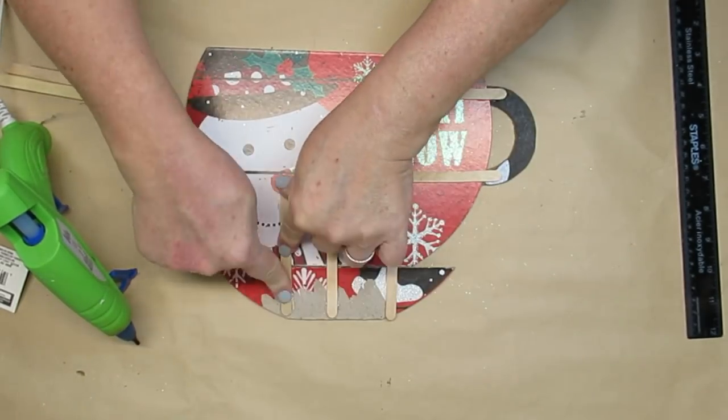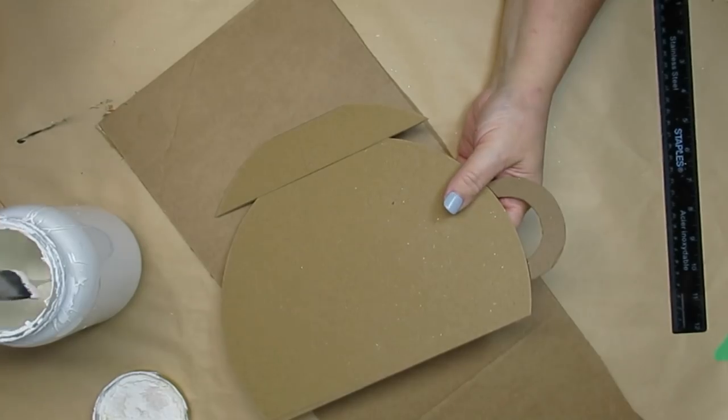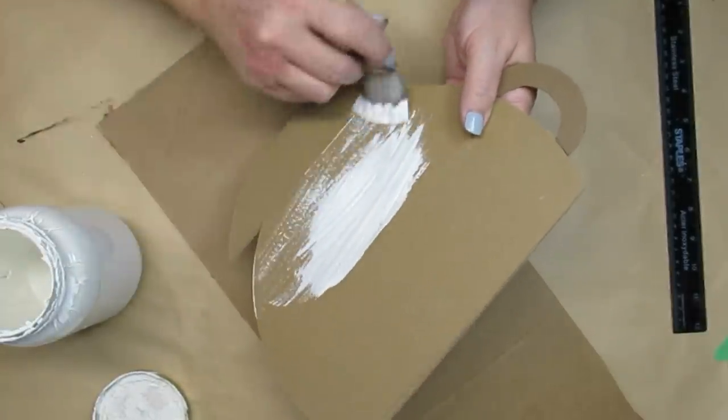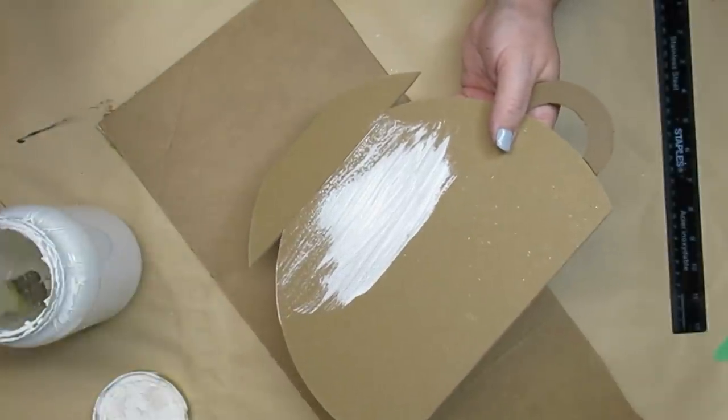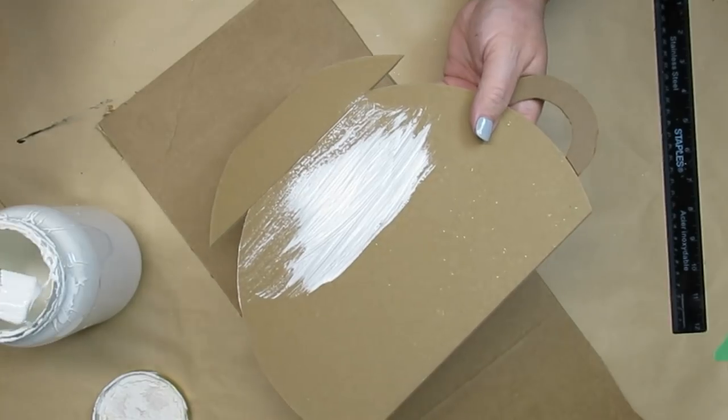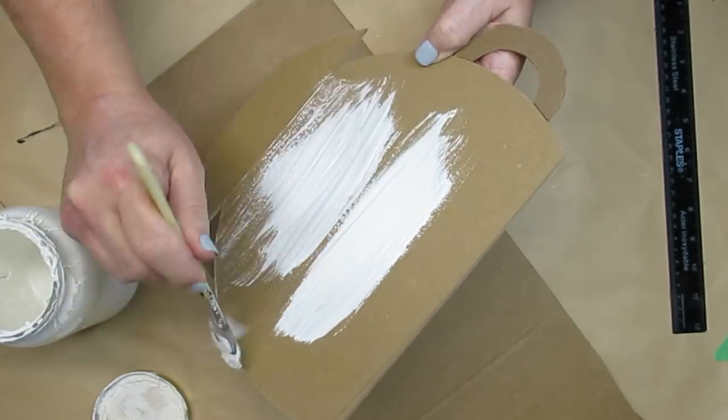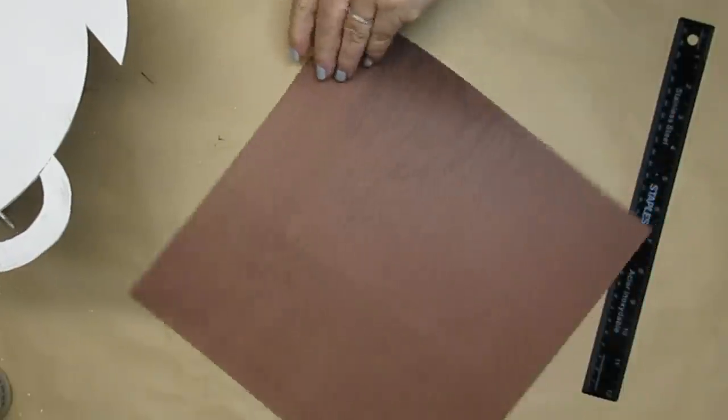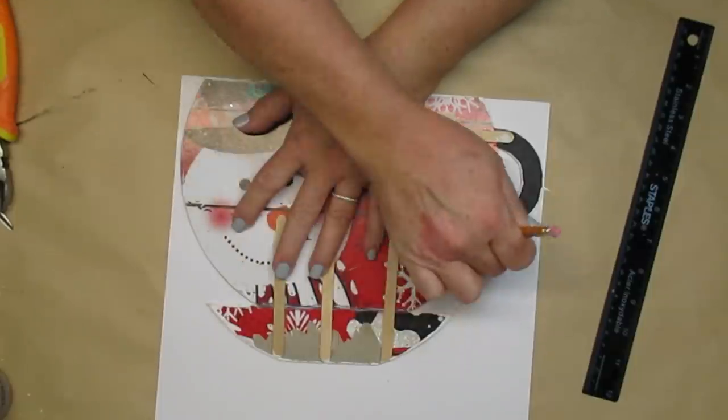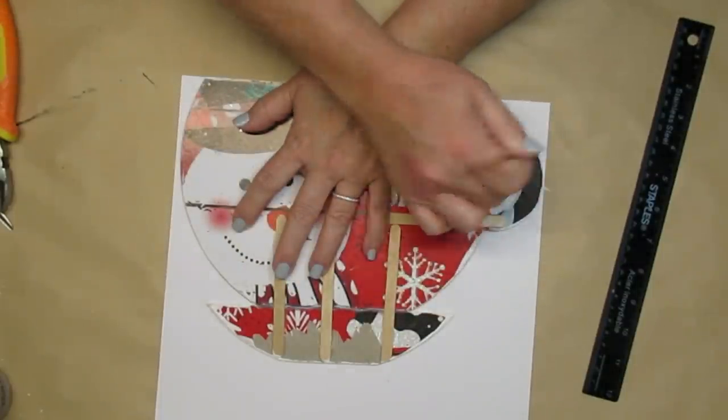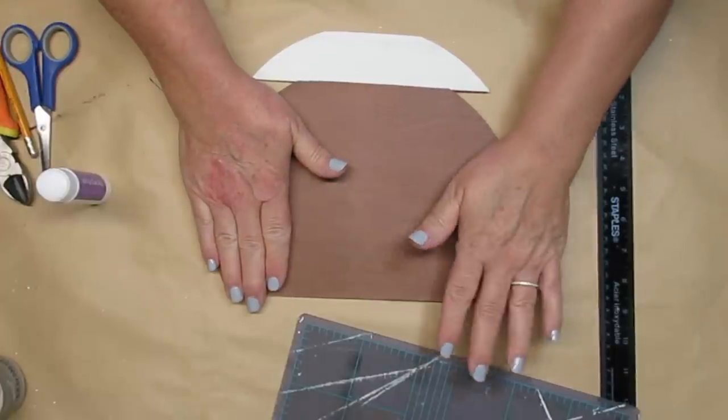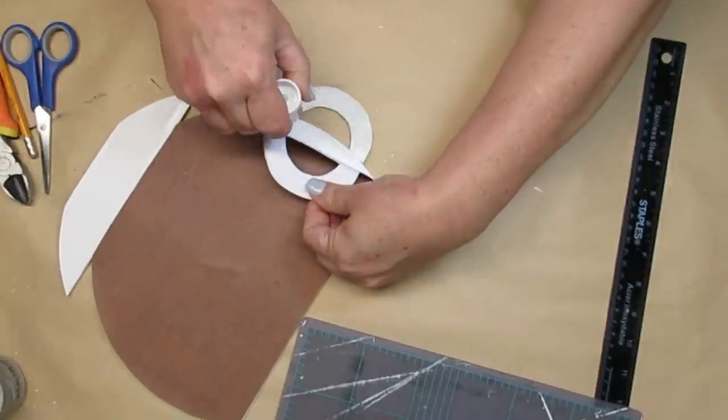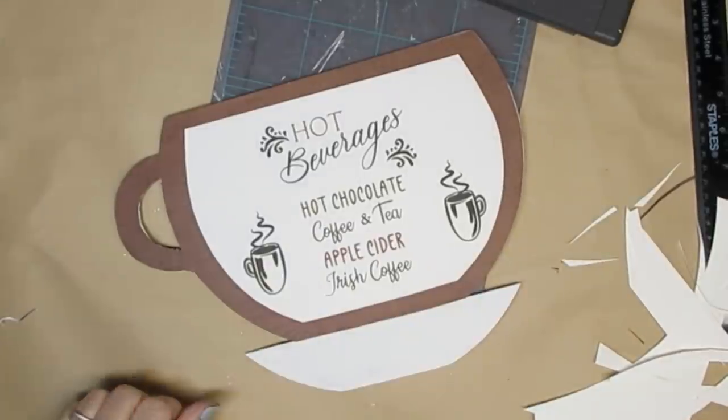I painted the whole thing white because I had something in mind, but I ended up changing my mind, which is something I do quite often when I'm crafting. So this is a step that you could skip if you're recreating this project. I'm going to use this beautiful brown paper that has a wood grain effect on the cup. I wanted this to be rustic to blend in with the other two projects I'm doing today as well. I just used a regular glue stick to apply the paper to the sign.